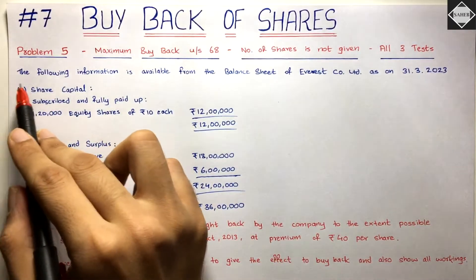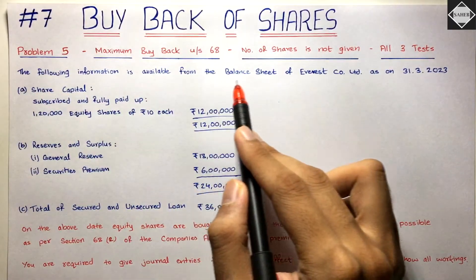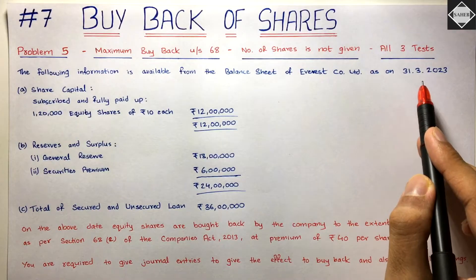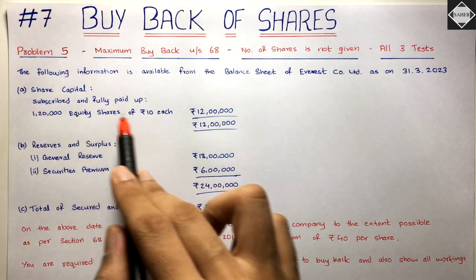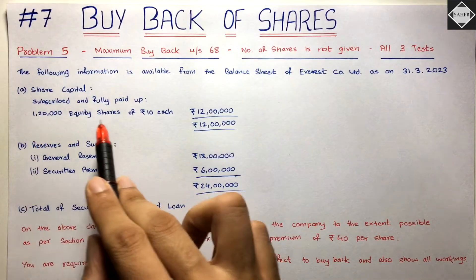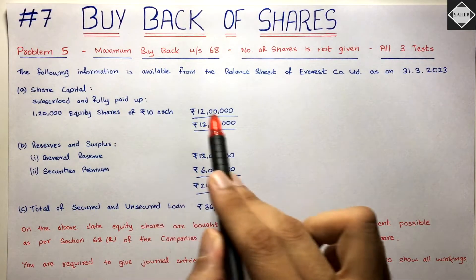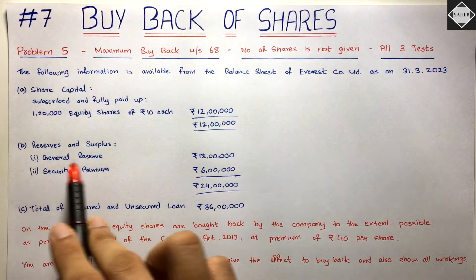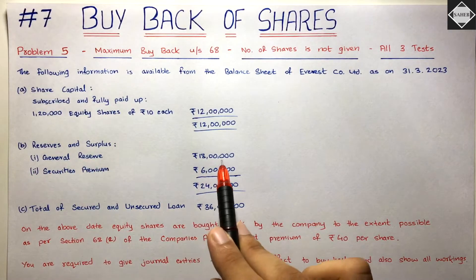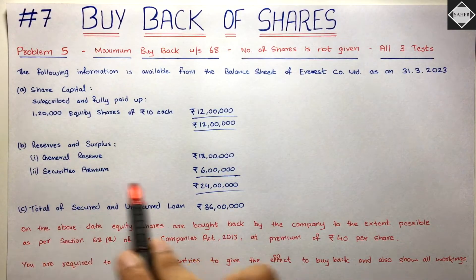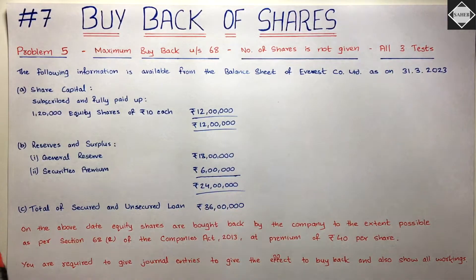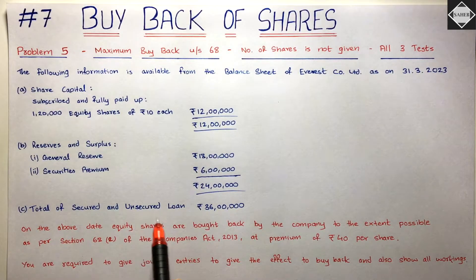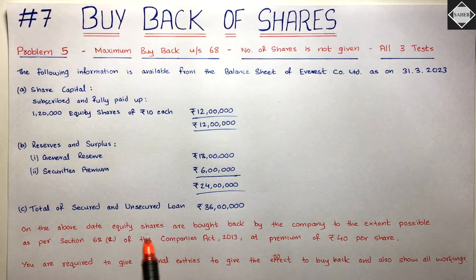The following information is available from the balance sheet of Everest Company Limited as on 31st March 2023: share capital - subscribed and fully paid up: 1 lakh 20,000 equity shares of ₹10 each = ₹12 lakhs. Reserves and surplus: general reserve ₹18 lakhs, securities premium ₹6 lakhs, total reserves ₹24 lakhs. Total secured and unsecured loans = ₹36 lakhs.